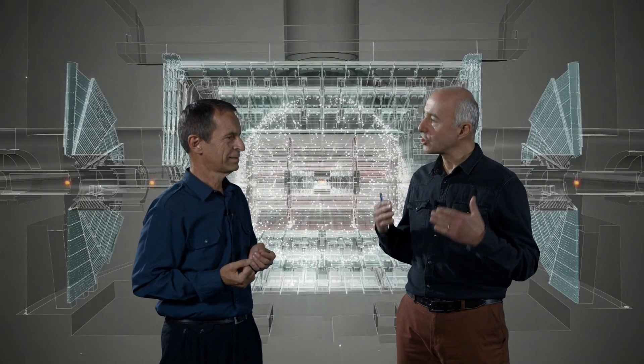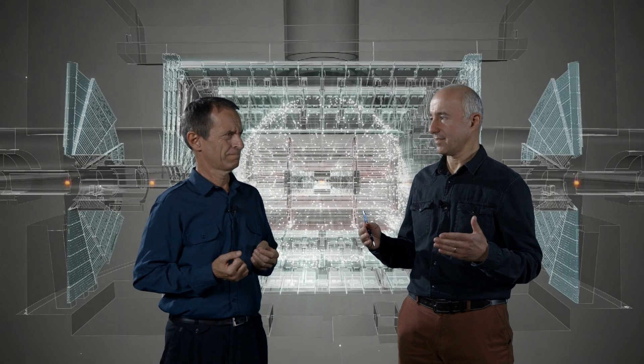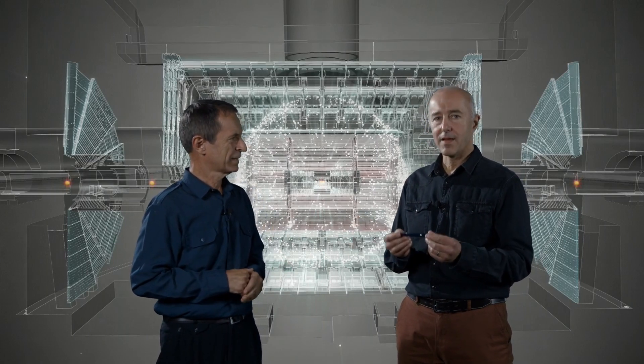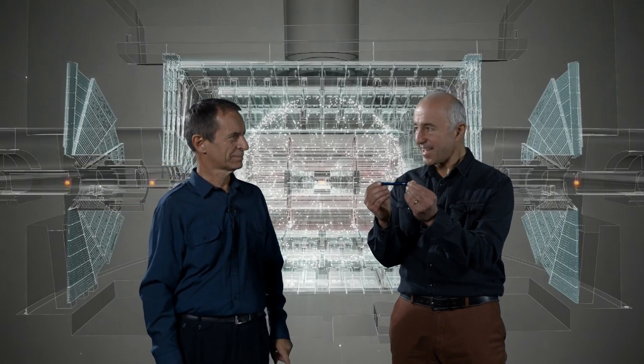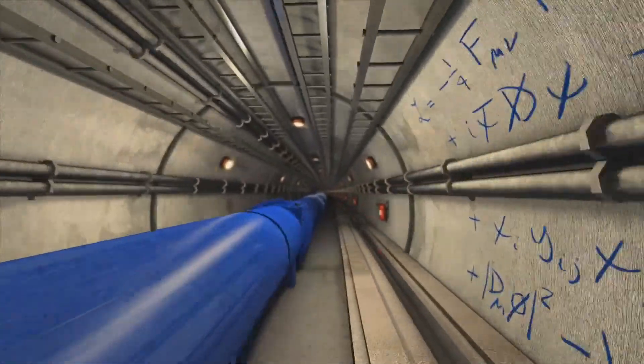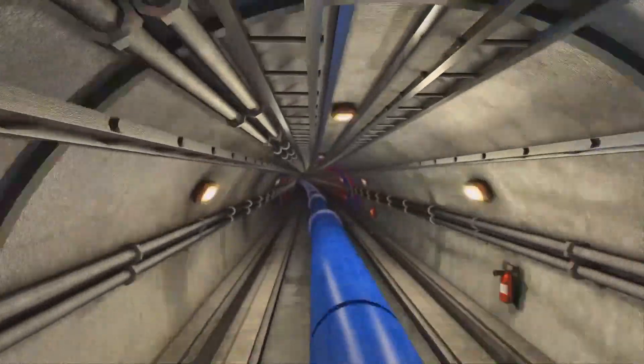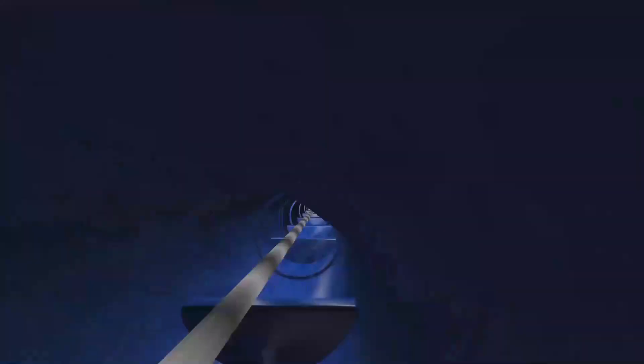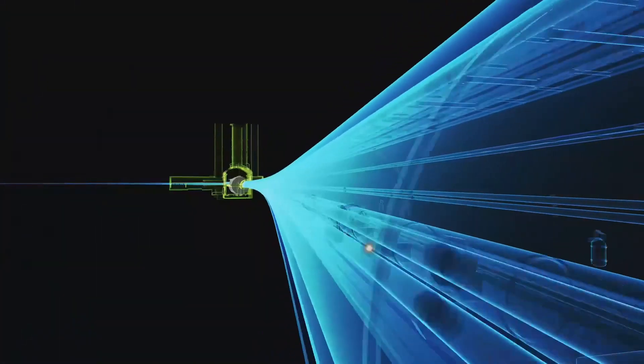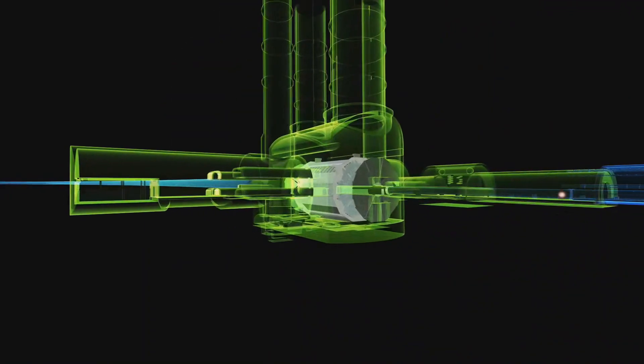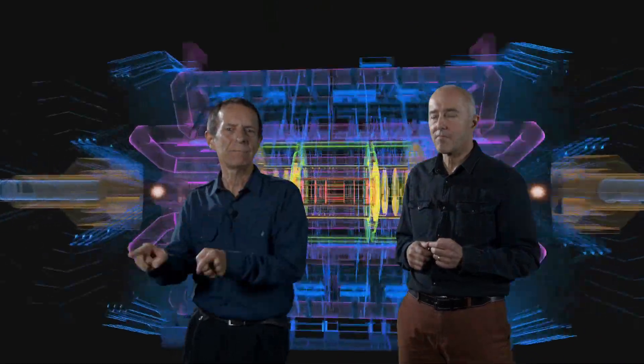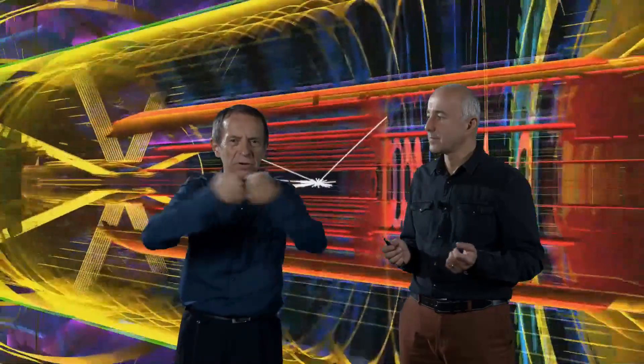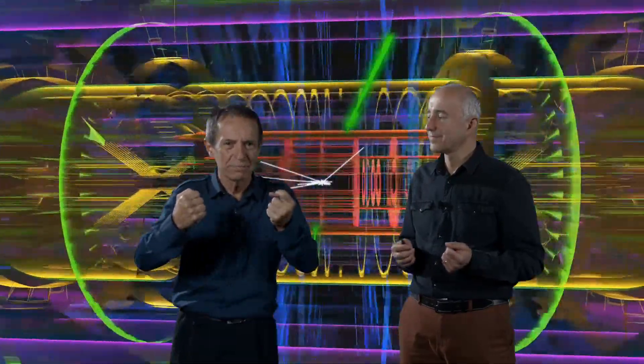Rozpędzamy protony do energii 6,5 teraelektronowolta. Jakby to lepiej wytłumaczyć? Gdybyśmy tak rozpędzili ten długopis, miałby tyle energii, co roczne zużycie energii elektrycznej całej Europy. Zastanawiacie się pewnie – po co aż tak wielka energia? Najlepiej tłumaczy to najsłynniejszy wzór fizyczny świata – E równa się mc². Poprzez zderzenie dwóch tak rozpędzonych protonów możemy wyprodukować zupełnie inny masywny obiekt, którego inaczej nie dałoby się zaobserwować, bo nie występuje w otaczającej nas materii. Czyli zamieniamy energię na masy.